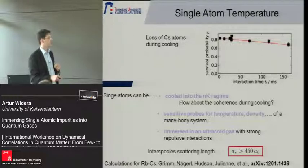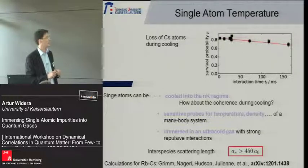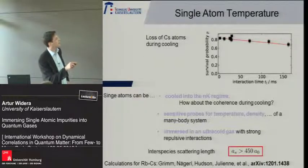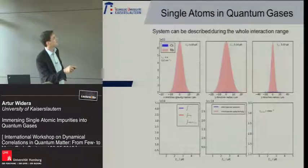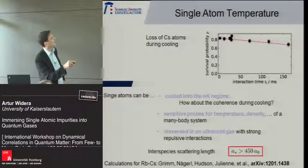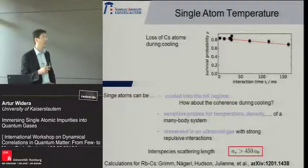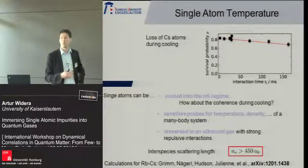There are technical issues: a released single atom could oscillate in an orbit that doesn't overlap the rubidium cloud, so the effective interaction is lower than assumed. Importantly, during cooling we hardly lose any cesium atoms — from 80% survival we lose only about 10% during the 60–70 milliseconds needed for equilibration. We can therefore use this cooling to prepare ultra-cold single atoms and use them as probes for temperature and density of a many-body system.